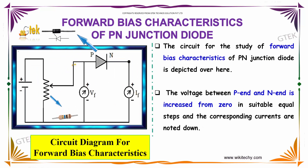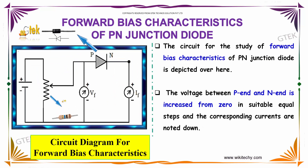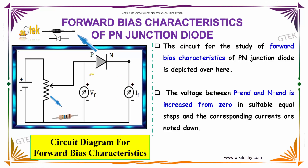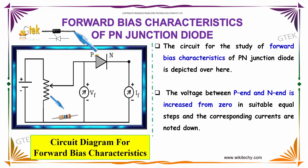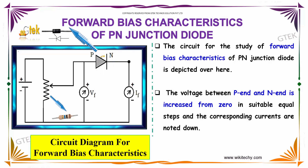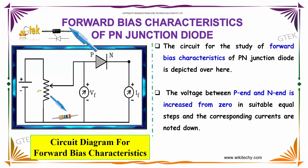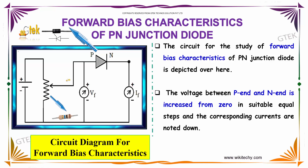The circuit for the study of forward bias characteristics of a PN junction diode is shown here. The voltage between the PN junction is increased from zero in suitable equal steps and the corresponding current values are noted. We are looking into the forward bias characteristics of a PN junction diode.